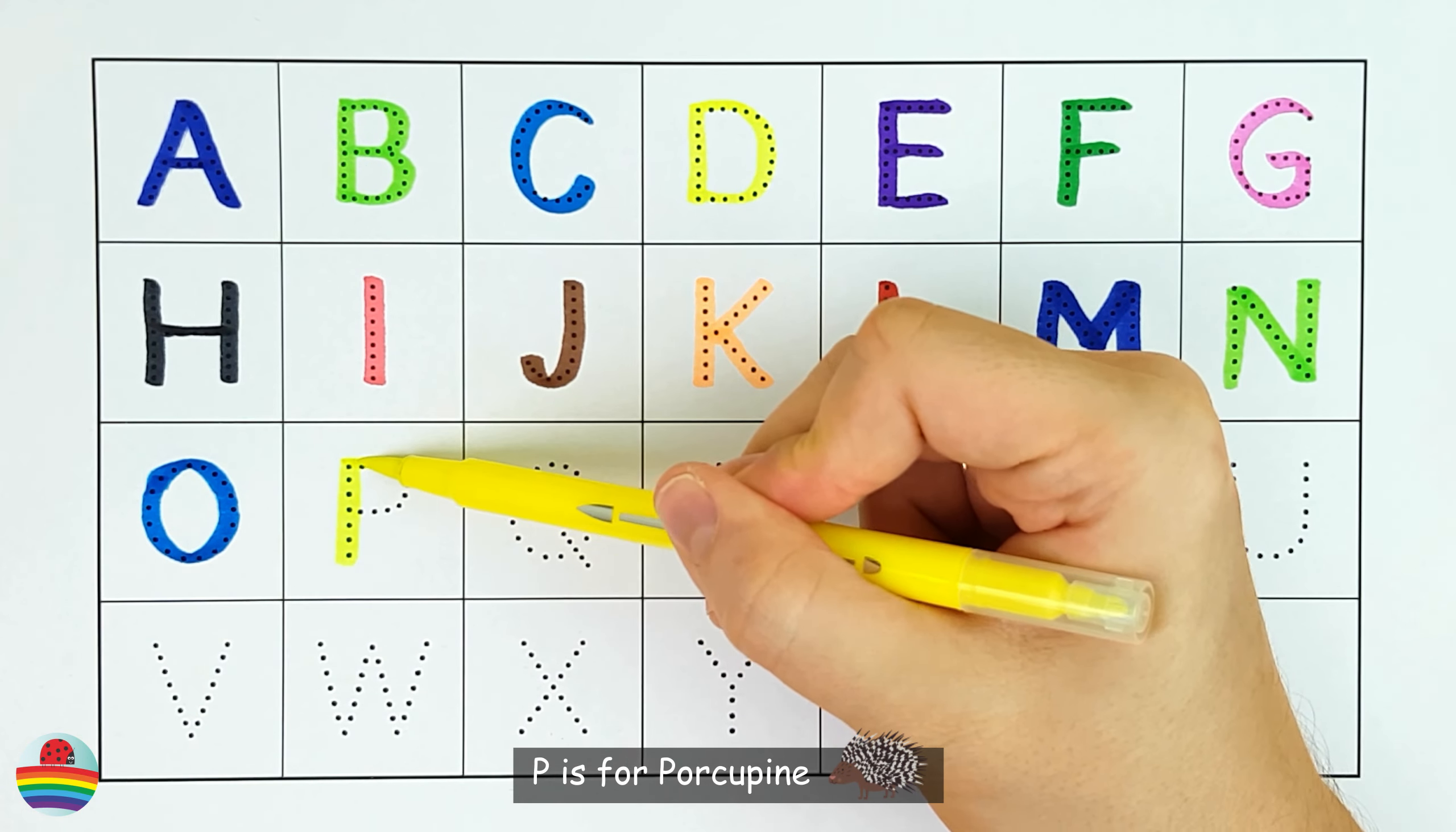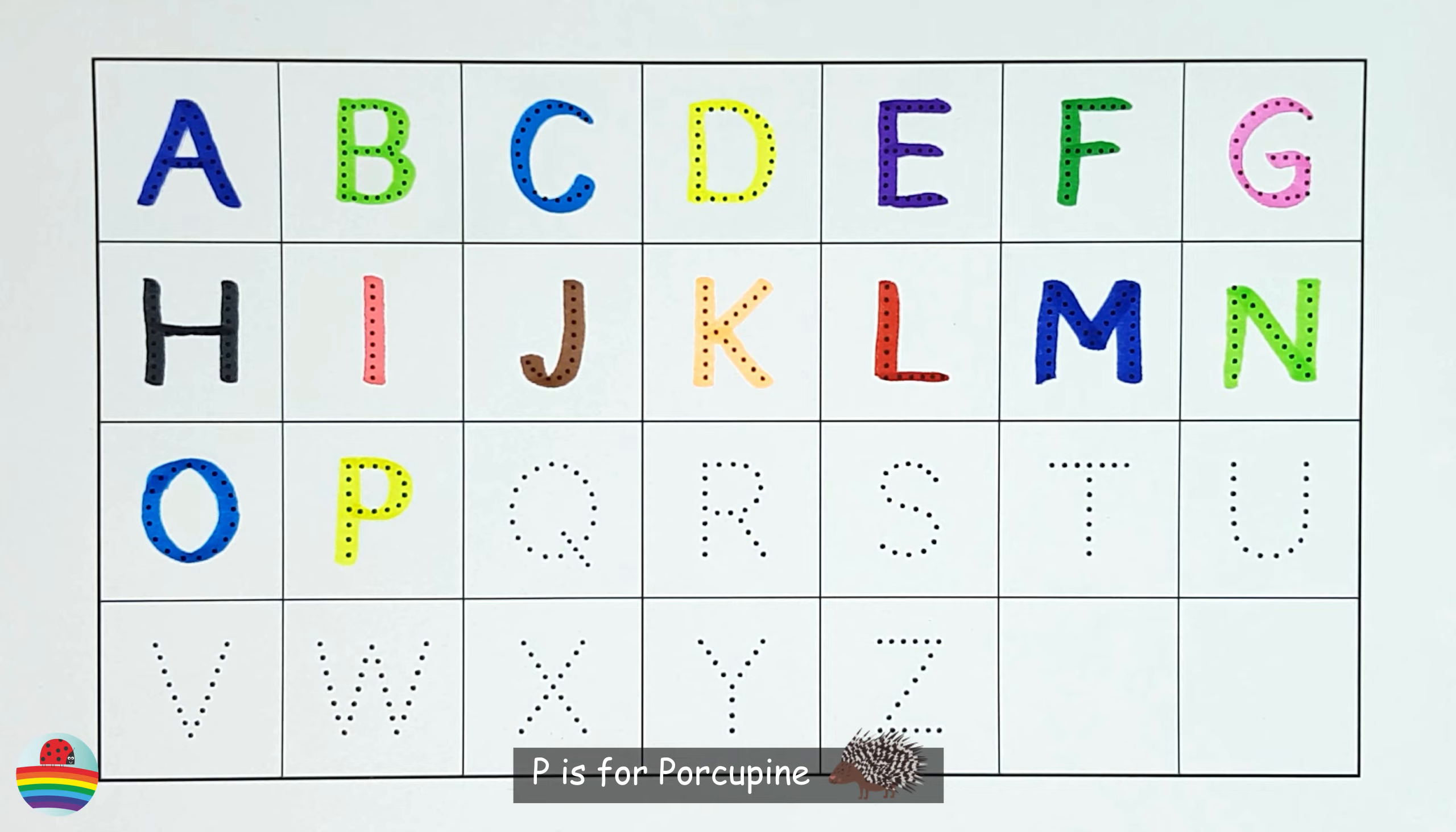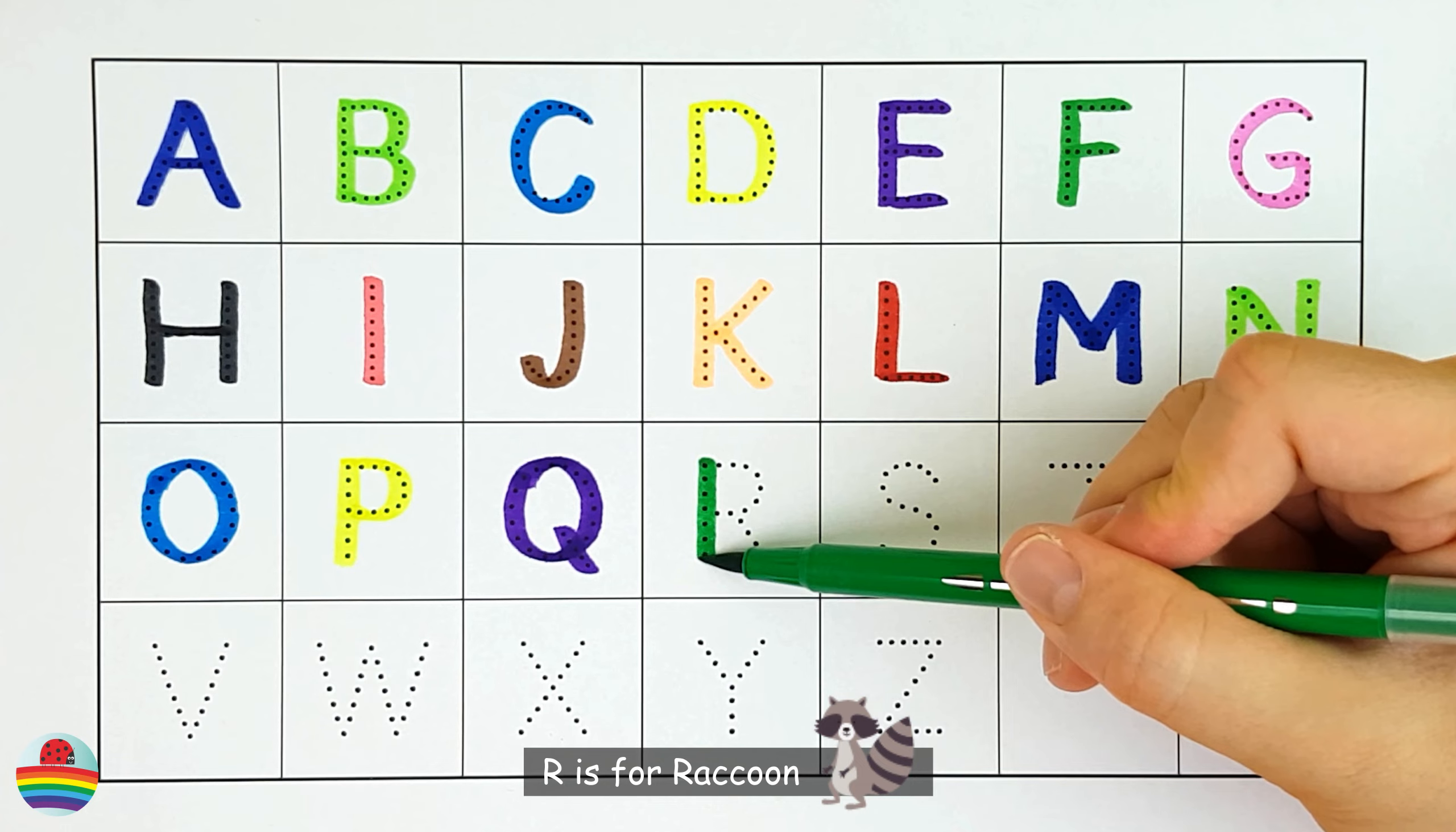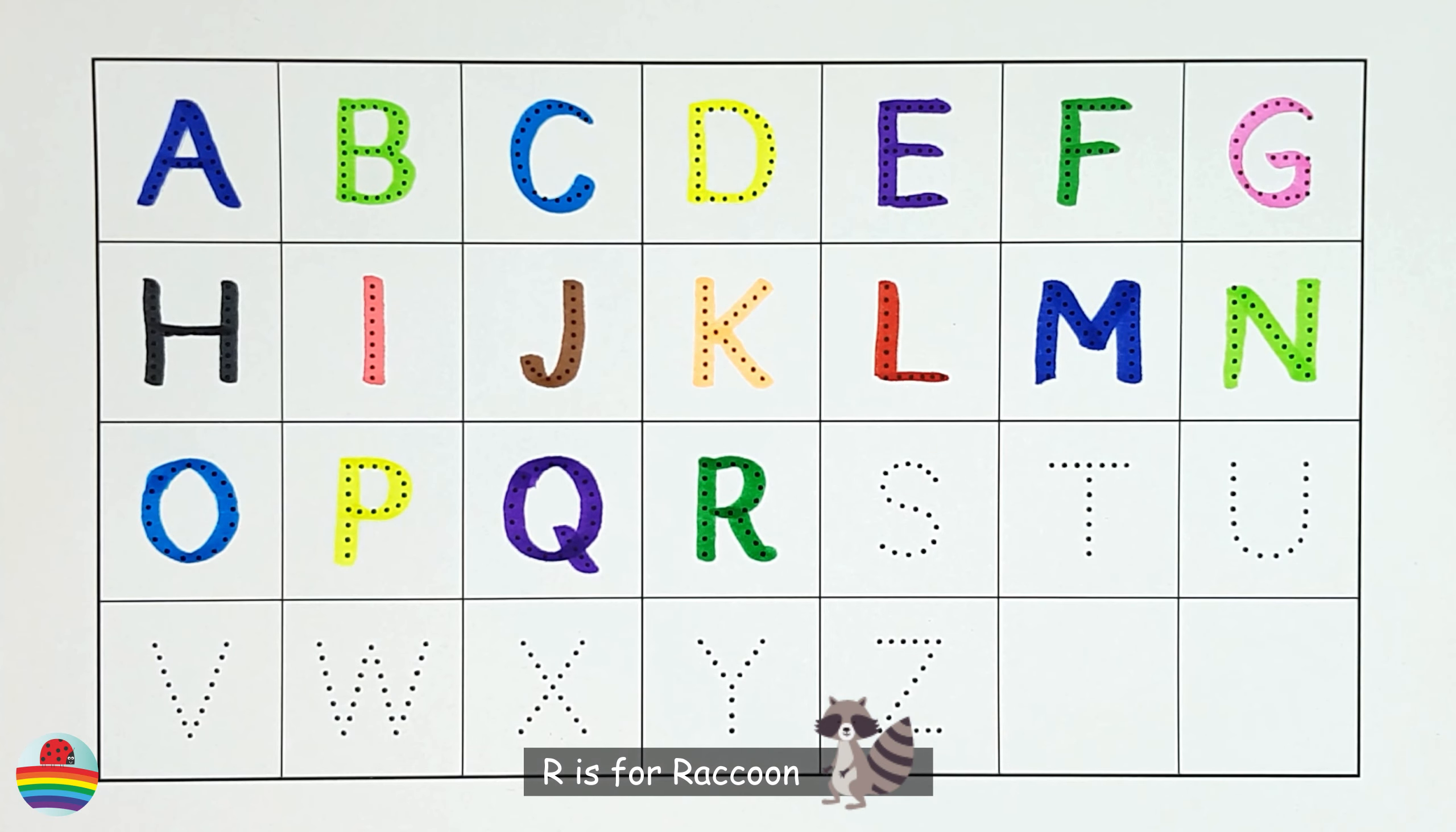P. P is for Porcupine. P. Q. Q is for Queen Bee. Q. R. R is for Raccoon. R.